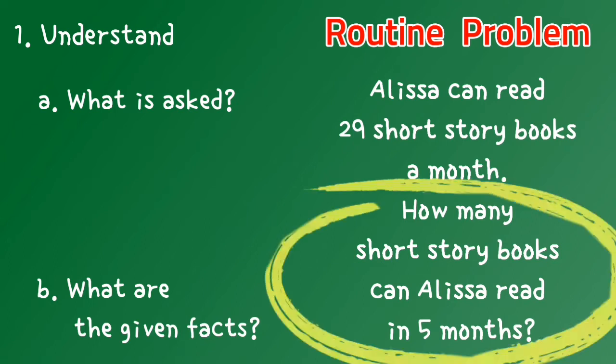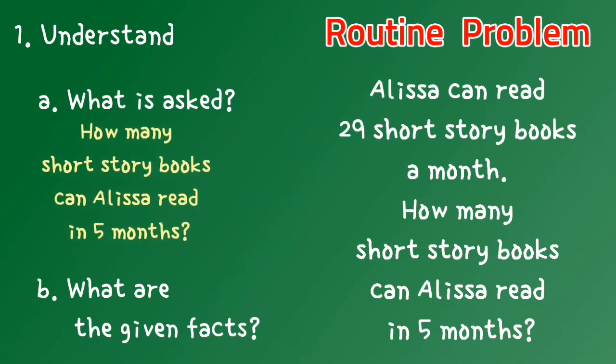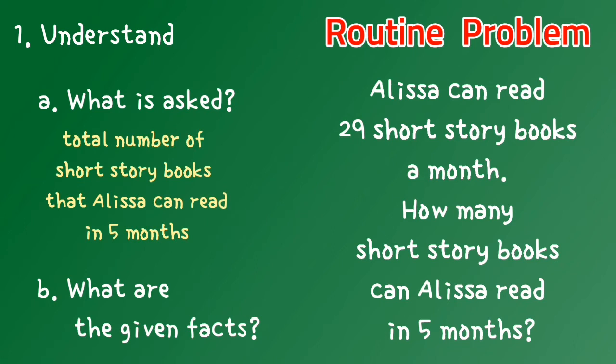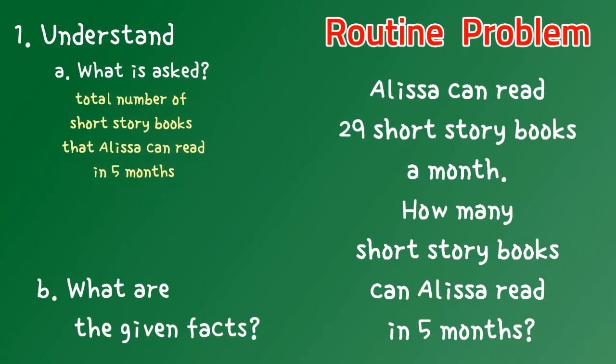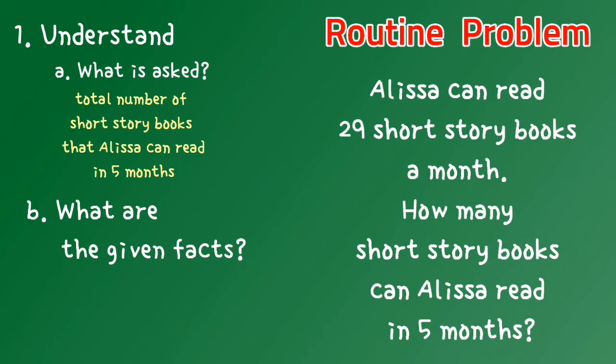So what is asked in the problem? You can answer this, or if you can construct a sentence or phrase for the answer, the idea will be like this. Now what are the given facts? Remember, given facts are important numbers in the problem. These numbers are used to solve the problem. In this problem, given facts are 29 short storybooks and five months.